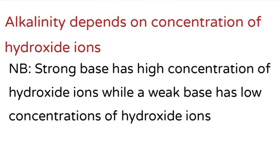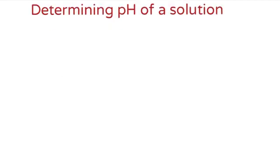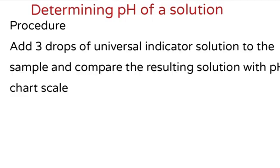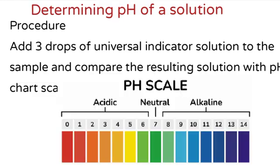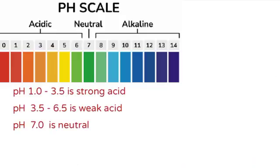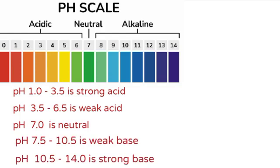To determine the pH of a solution, you use universal indicator solution or universal indicator paper. If you are given universal indicator solution, add three drops to the sample and compare with the pH scale. If you are given universal indicator paper, dip it in the sample and compare with the pH scale. pH 1.0 to 3.5 is a strong acid; 3.5 to 6.5 is a weak acid; pH 7.0 is neutral; 7.5 to 10.5 is a weak base; 10.5 to 14.0 is a strong base.